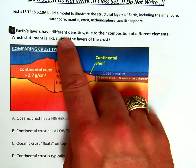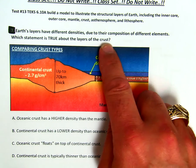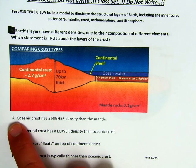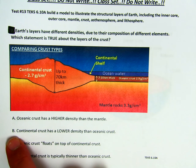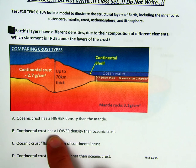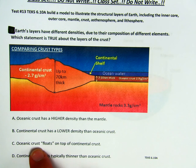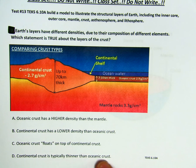Earth's layers have different densities due to their composition of different elements. Which statement is true about the layers of the crust? So take a good look at your chart here. Is it A, oceanic crust has a higher density than the mantle? B, continental crust has a lower density than oceanic crust? C, oceanic crust floats on top of continental crust? Or D, continental crust is typically thinner than oceanic crust?